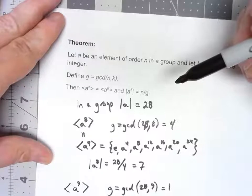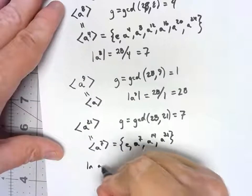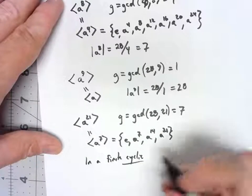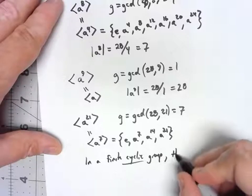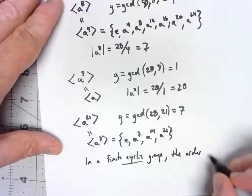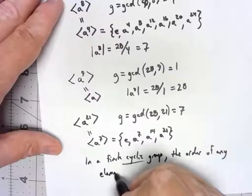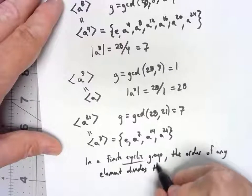What we can say is that in a finite, cyclic—has to be cyclic—group, the order of any element divides the order of the group.